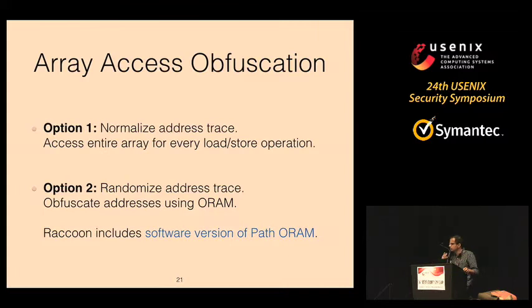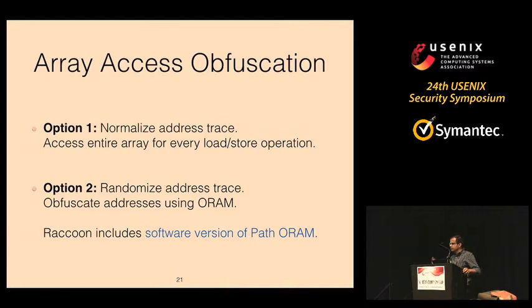As it turns out, processors, caches, prefetchers, and vector instruction support are quite strong, so we can make this less inefficient using features of modern processors. We also implement a software equivalent of the path ORAM algorithm. Using the register-level CMO operation and a couple of other tricks, it is possible to run the ORAM algorithm in software rather than requiring extra hardware, which also reduces the trusted computing base.